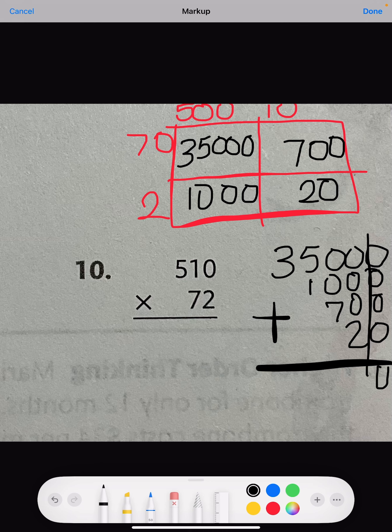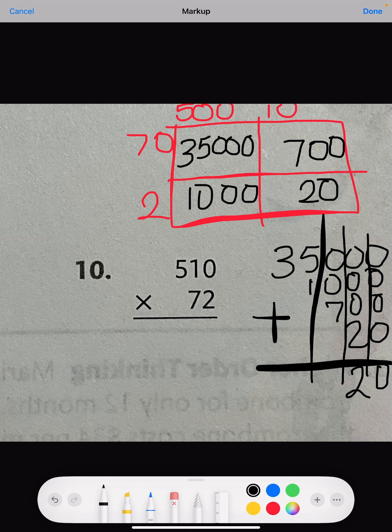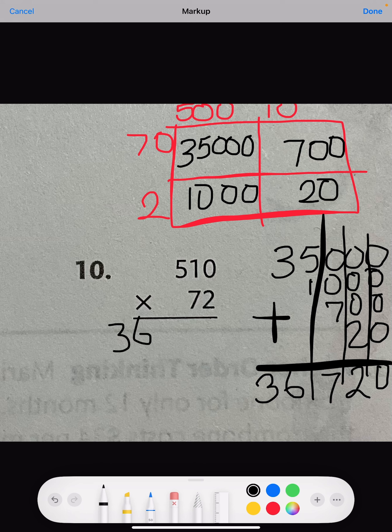We have zeros in the ones, and then we have two tens. We have seven in the hundreds, and 35 plus 1 is 36, making our answer 36,720.